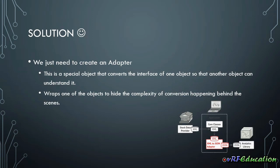An adapter is a special object that converts the interface of one object so that another object can understand it. An adapter wraps one of the objects to hide the complexity of conversion happening behind the scenes. The wrapped object isn't even aware of the adapter. Here, we have our application that gets data from different sources in XML format — these are the core classes.